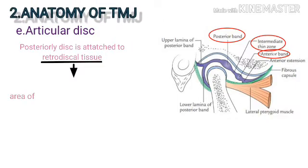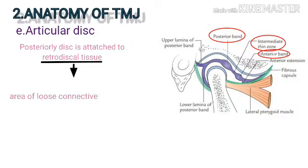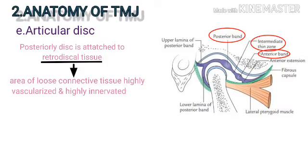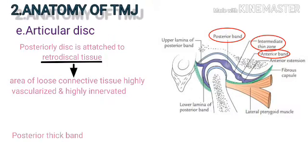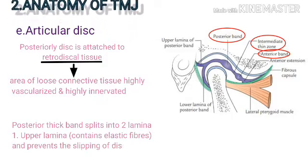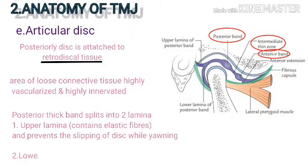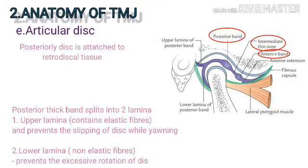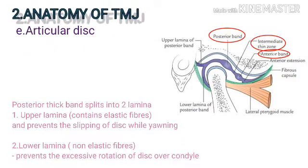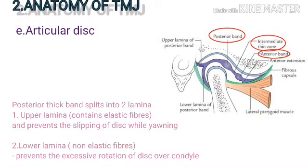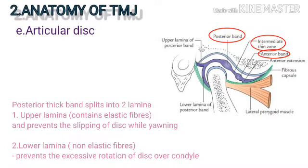Posteriorly, the disc is attached to retrodiscal tissue, which is an area of loose connective tissue that is highly vascularized and highly innervated. The posterior thick band splits into two laminae: the upper lamina contains elastic fibers and prevents slipping of the disc during yawning, while the lower lamina contains non-elastic fibers and prevents excessive rotation of the disc over the condyle.